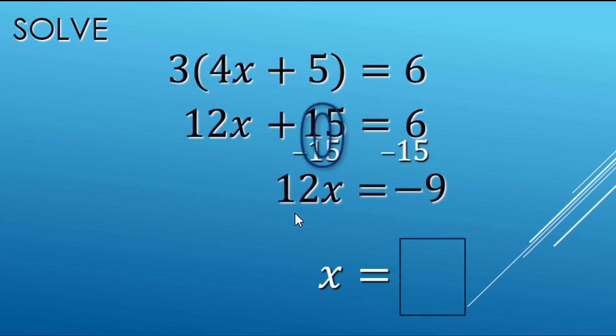Next up, we're going to undo the 12 being multiplied with a 12 being divided by to both sides of the equal sign there.